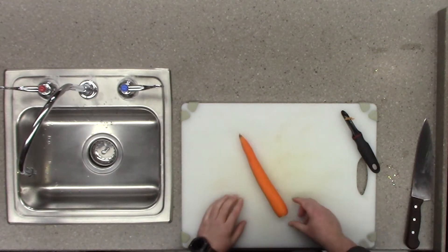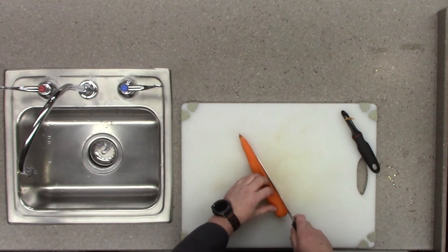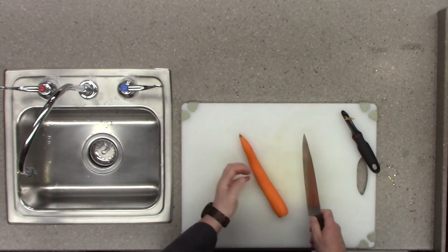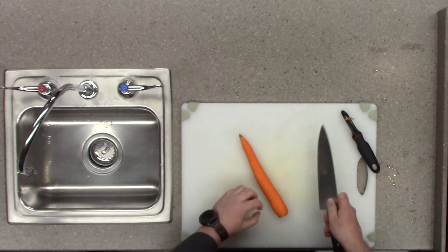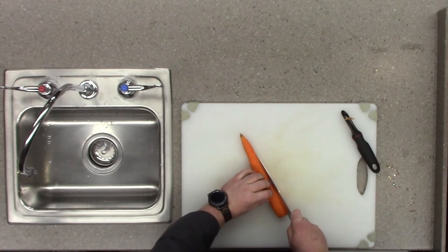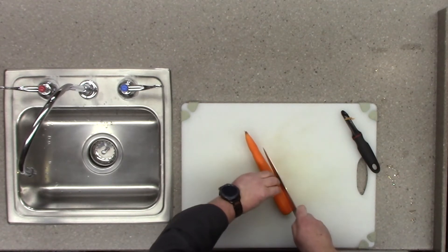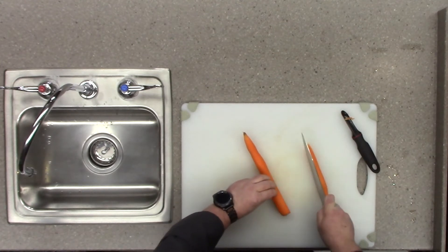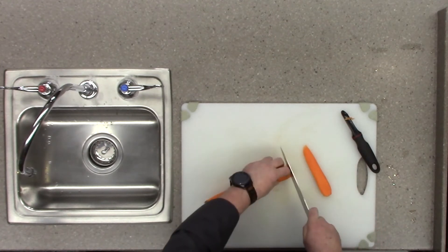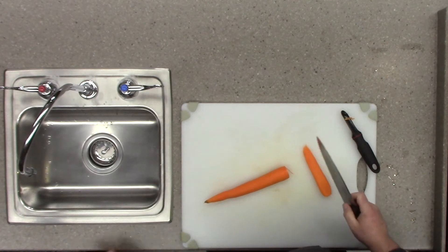Alright, so when cutting the carrot, we want to remove part of the side of it so that way it doesn't roll on us. And so once again, I'm doing the pinch grip, claw grip, keeping my fingers out of the way, and I'm going to try to find the flattest part where it's the most stable. So I'm going to cut that off. I have a nice flat surface to work with. Cut that right there.